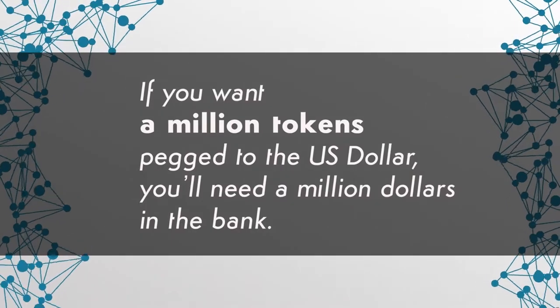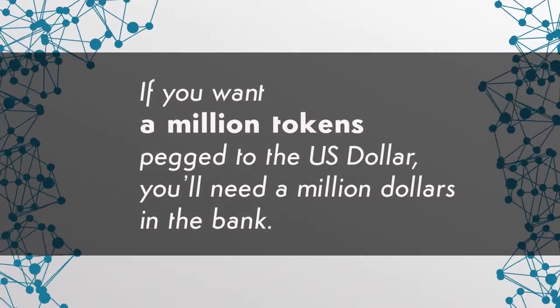The first type of stablecoin is the fiat-collateralized type. To achieve pegging, a specific amount of fiat currency has to be deposited within a centralized party. This amount then represents the number of crypto assets issued. So if you want a million tokens pegged to the US dollar, you'll need a million dollars in the bank. The deposit guarantees redeemability of the coin and ensures its liquidity. As simple and straightforward as this model sounds, there are certain challenges — scalability can be an issue, as each coin needs backing in the form of real funds. Many people also criticize the necessity for a centralized deposit and the need for regular audits to ensure the backing capital is present.